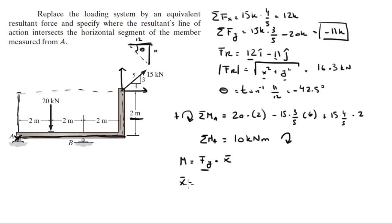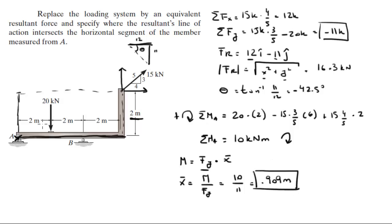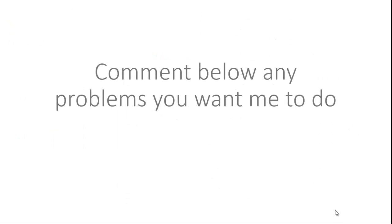When you solve, you get that x equals the moment over F_y: the moment is 10 and F_y is 11, so this comes out to be 0.909 meters — the resultant will be acting somewhere around here. Final answer: the magnitude of the resultant force is 16.3 kN. Please comment below if you want me to do any problems and I'll be happy to help.